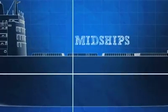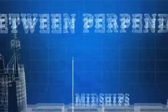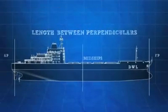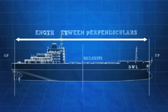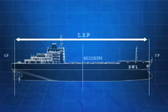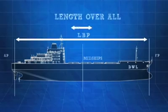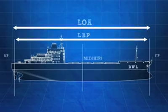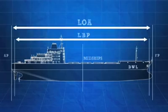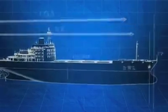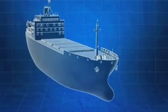Midships is the horizontal point halfway between the forward and aft perpendiculars. The length between perpendiculars, or LBP, is the total horizontal distance between the forward and aft perpendiculars. Length overall, or LOA, is the total length of a ship at its longest point. Note that this may be a little longer than the LBP because a ship can extend slightly past the perpendiculars.